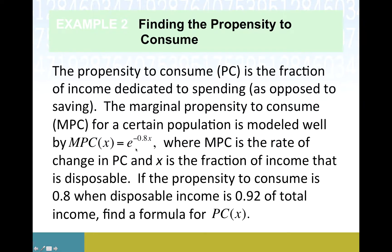As we imagine increasing the amount of money people have to spend as they will, what happens to propensity to consume? Okay, so propensity to consume is 0.8 when disposable income is 0.92. We're given this little snapshot of information, which will probably help us later on. But our task is to find a formula for propensity to consume. So we have MPC, we're supposed to get to PC.